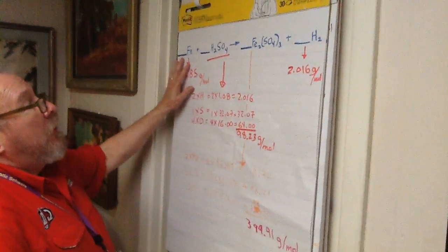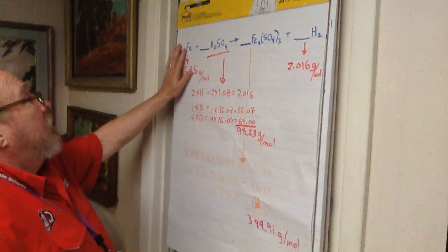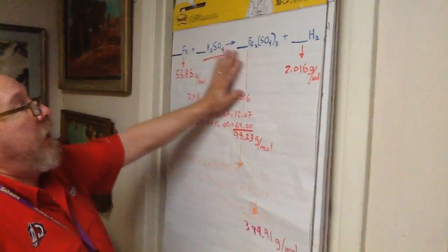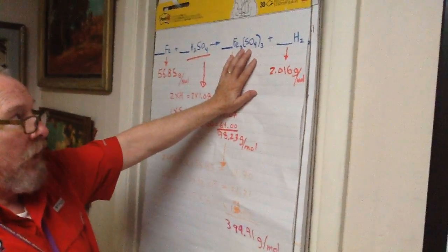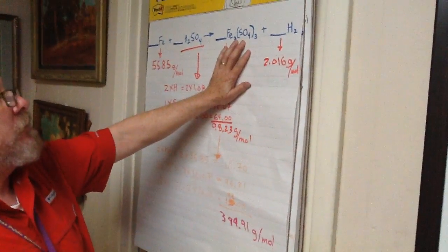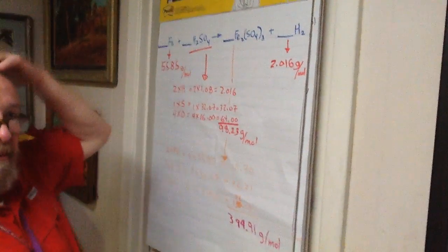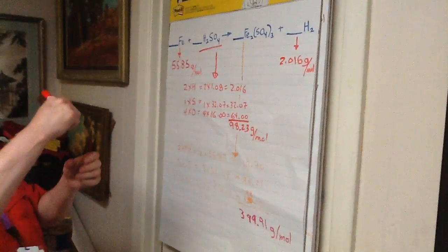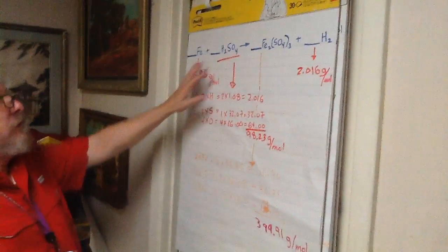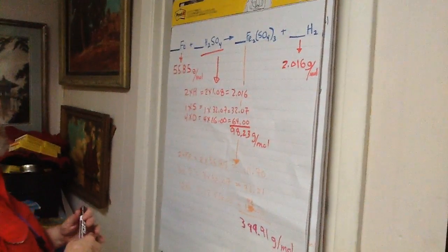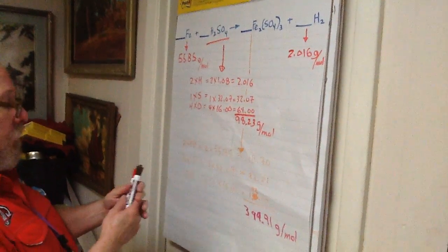But here we're looking at a reaction where we dissolve iron into sulfuric acid, make a salt, iron sulfate, iron 3 sulfate, and a gas. Little bubbles of gas come out when you drop a piece or some iron into a solution of sulfuric acid, especially concentrated sulfuric acid.